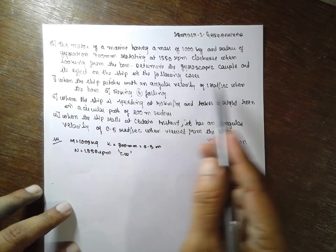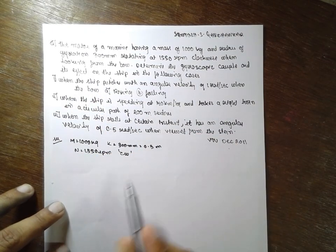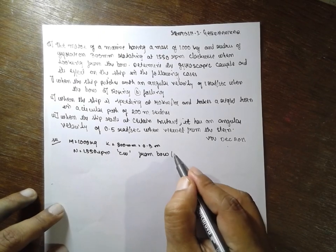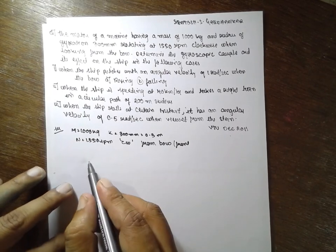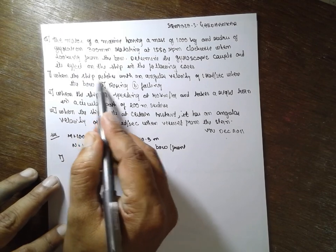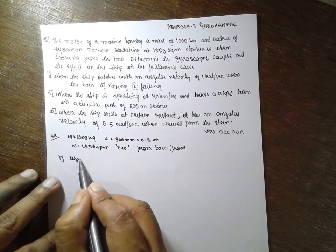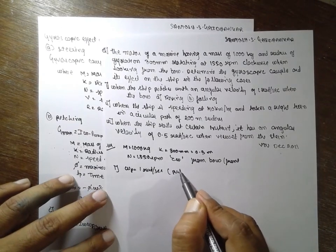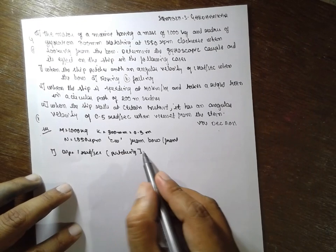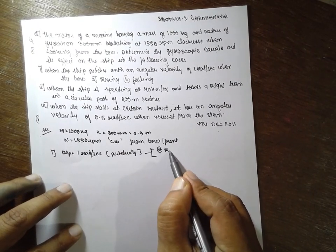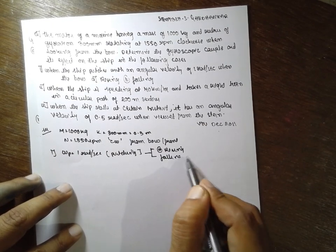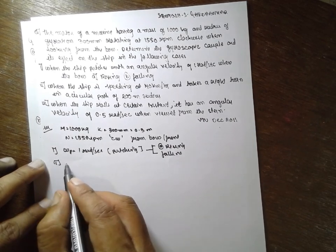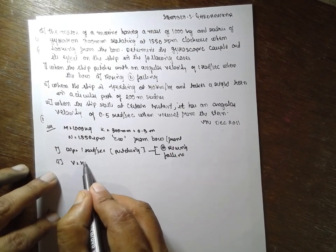Determine the gyroscopic couple for the effect of the ship in the following cases. Case one: when the ship pitches — viewed from the bow, that is the front side — with angular velocity omega_p equal to 1 radian per second. We have to find out two things: A) rising, and B) falling. Pitching is when the ship moves up and down. Second case: the ship is speeding at 40 km per hour.